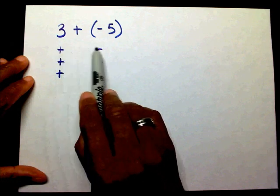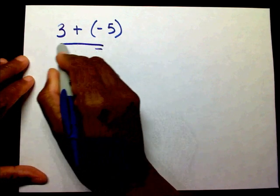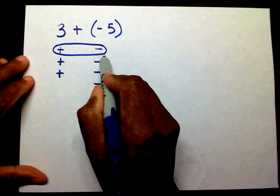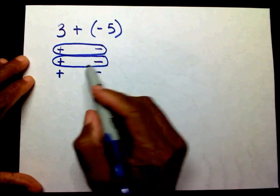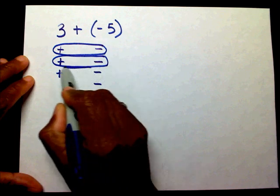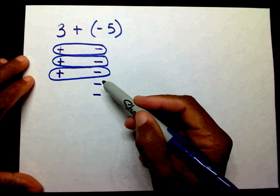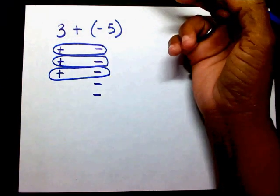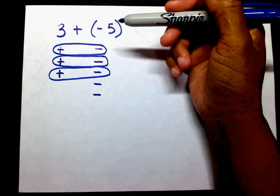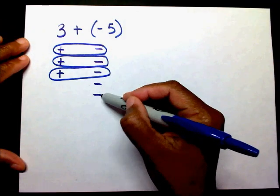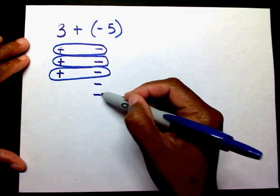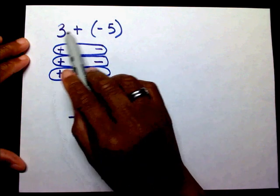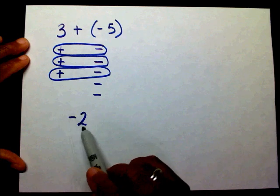I have a positive here and a negative here — when they get together that equals zero. Another positive and a negative come together, that creates a zero. Another positive and a negative create a zero. These three zeros mean they equal absolutely nothing. What am I left with? One, two — I have two negatives. So the answer to three plus negative five is negative two.